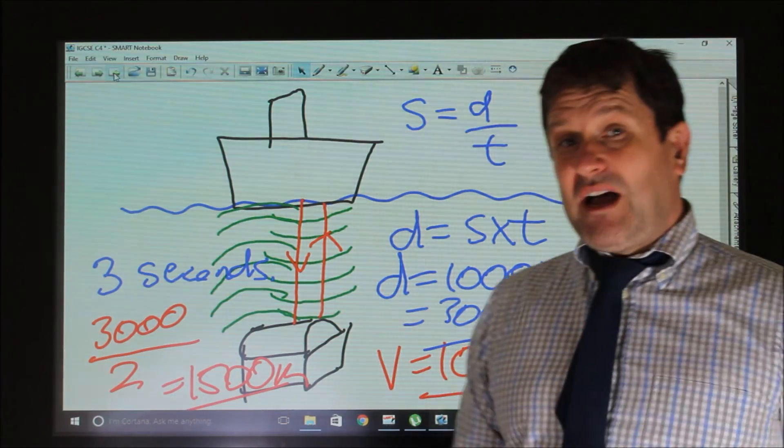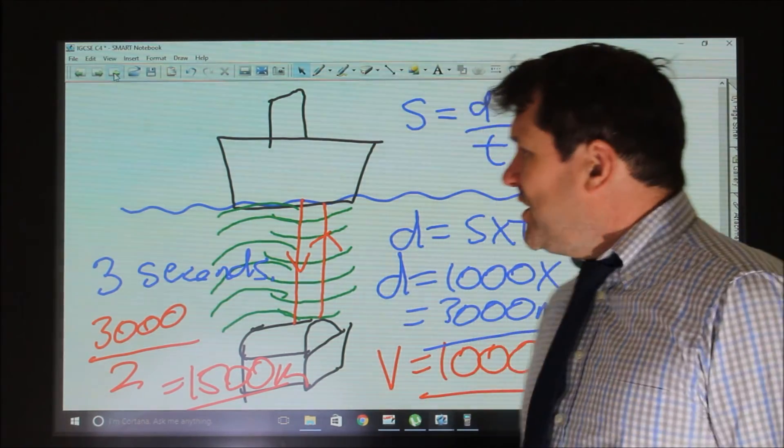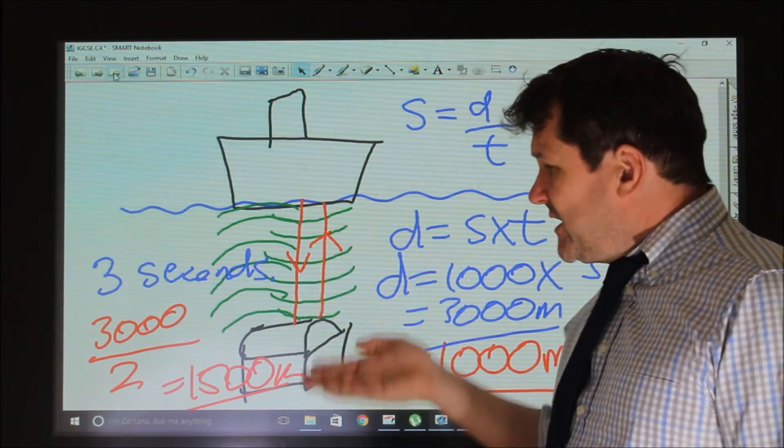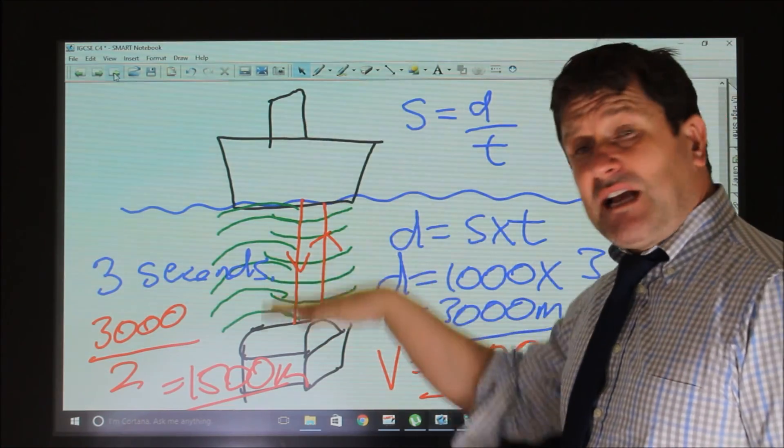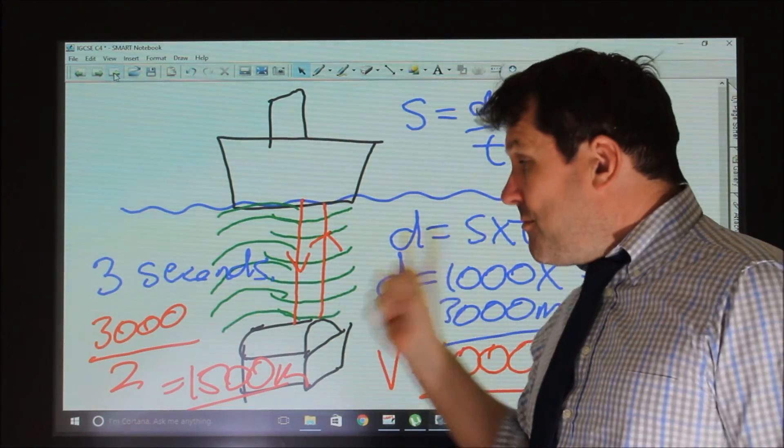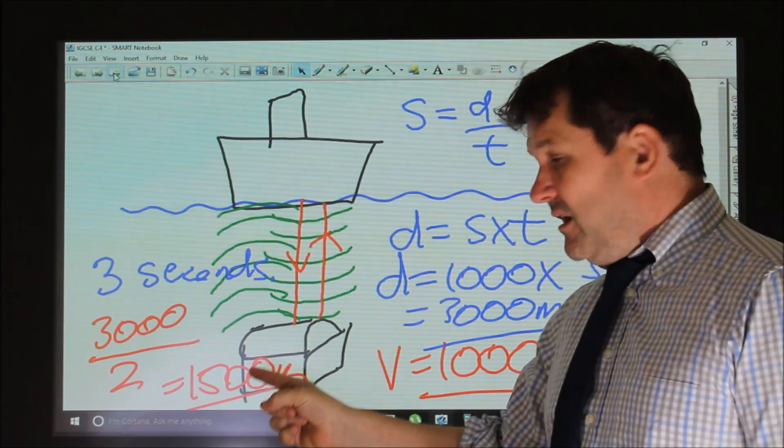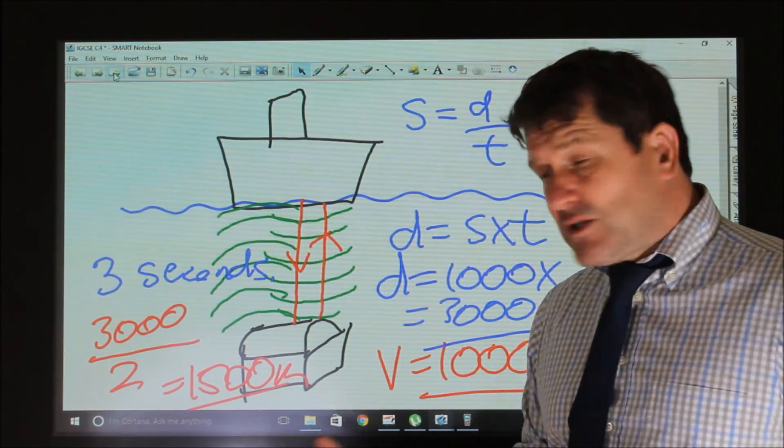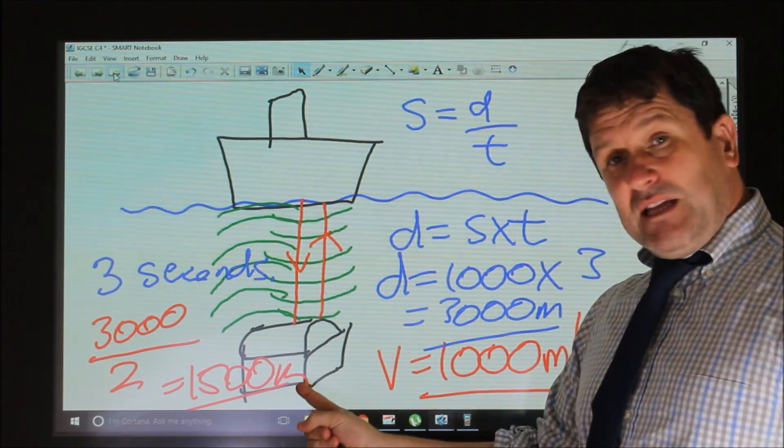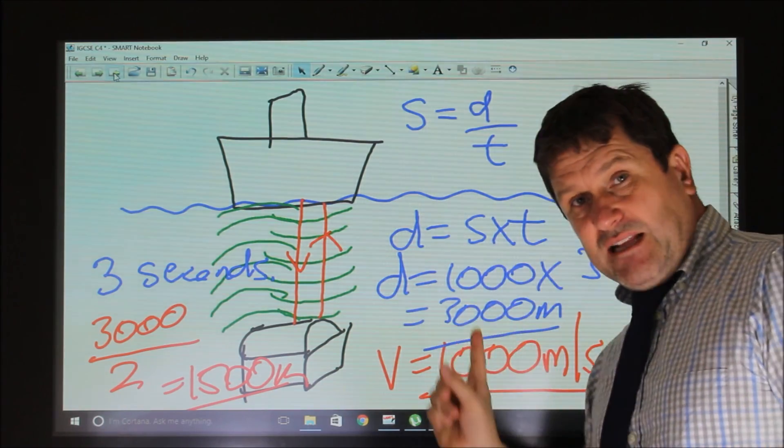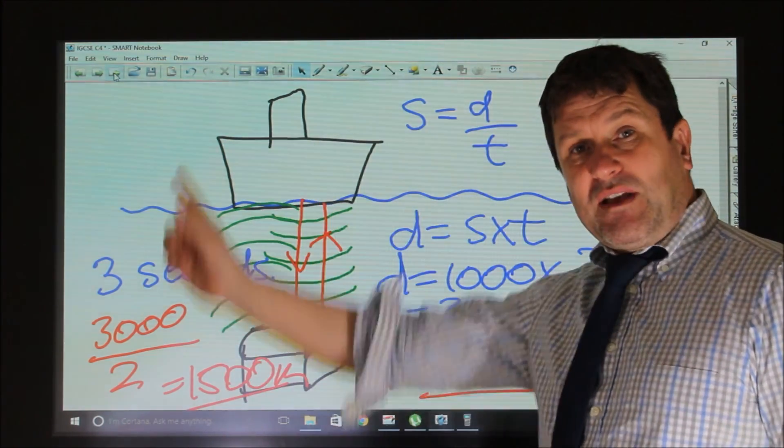Which is 1,500 metres. So it's important, when you're given a question, if it involves an echolocation with the sound wave being reflected, that you remember at the end to halve it. And always, always, always remember keep everything in metres and everything in seconds in all these type of calculations.